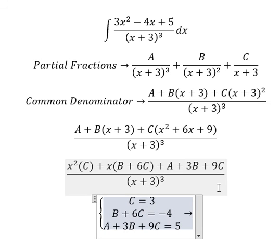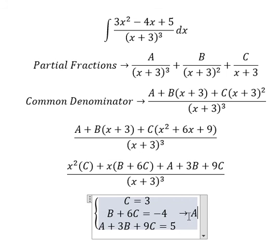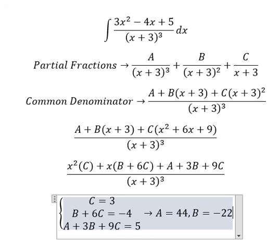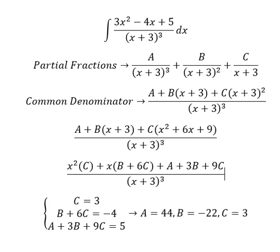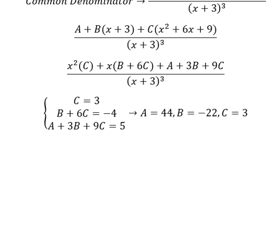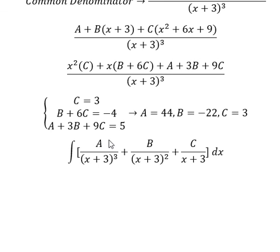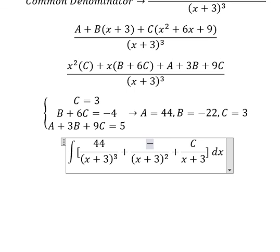Now we need to find the solutions of A, B, and C. We get B equals negative 22, C equals 3. Substituting back, A equals 44. So our values are A = 44, B = negative 22, and C = 3.